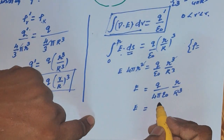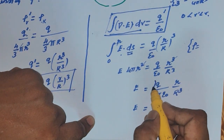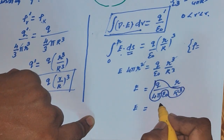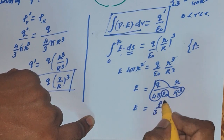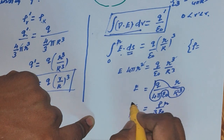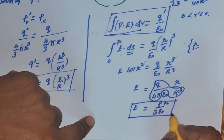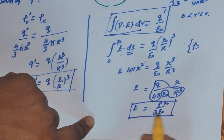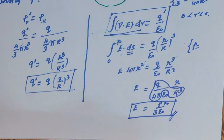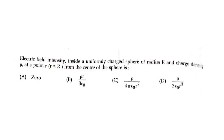So this is the electric field inside the sphere of radius small r. From the above derivation, the answer is E = rho × r divided by 3 × epsilon naught. This is the electric field intensity inside a uniformly charged sphere at a point r from the center.